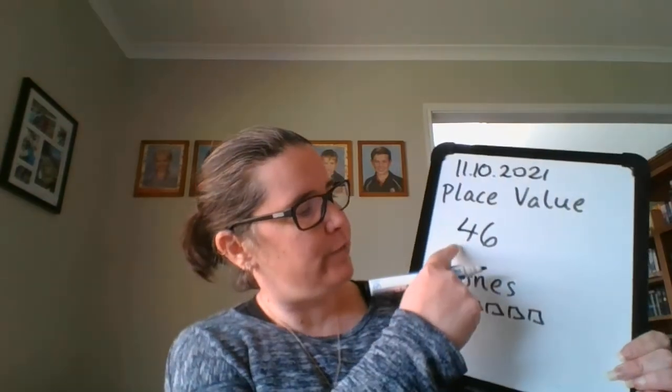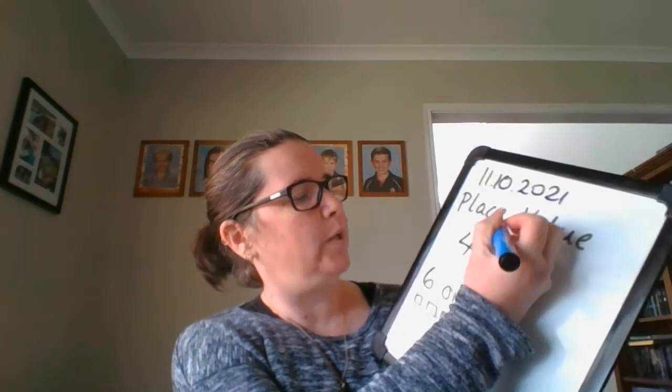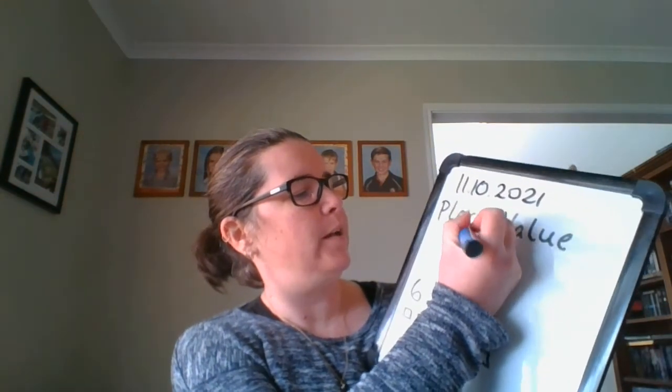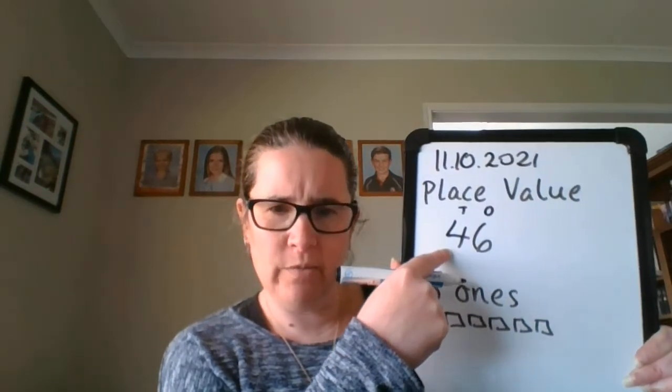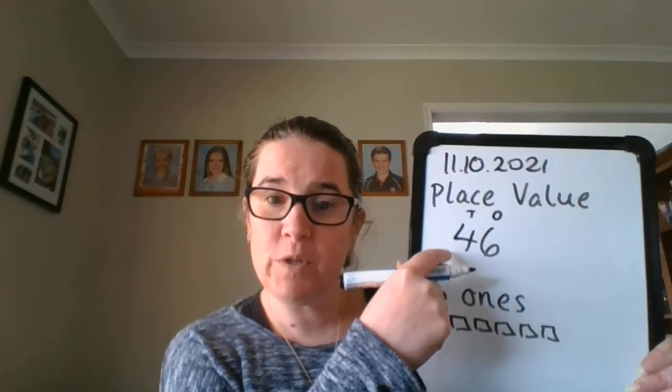And it's forty-six. These are the ones, and these are the tens. How many tens do I have in my number? I have four tens because that counts up to forty: ten, twenty, thirty, forty. So I'm going to write that — four tens — and I'm going to draw that, just drawing long rectangles showing that ten.